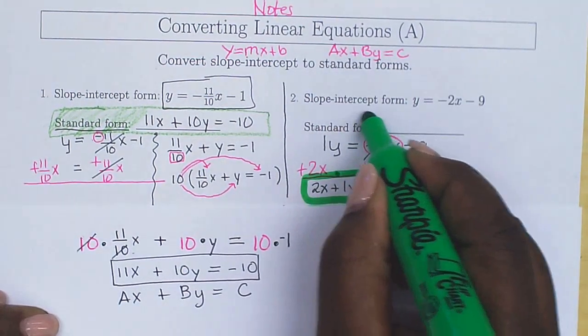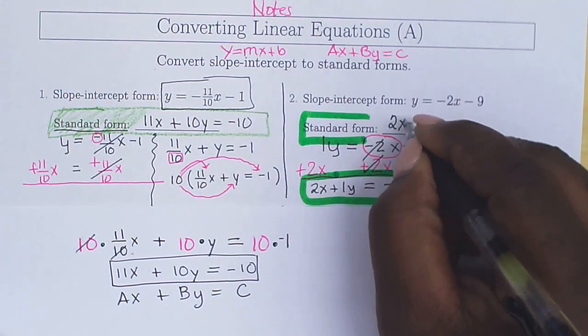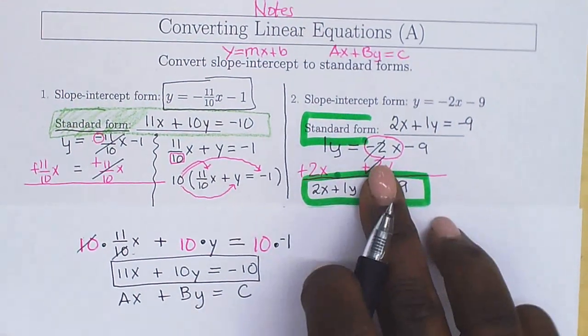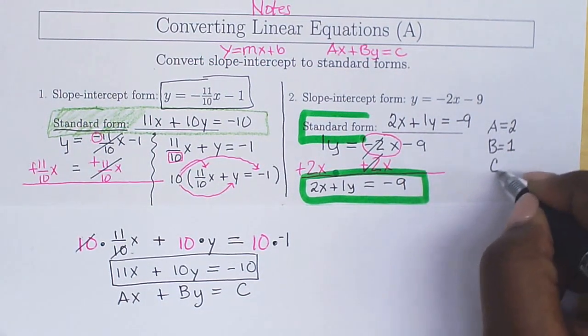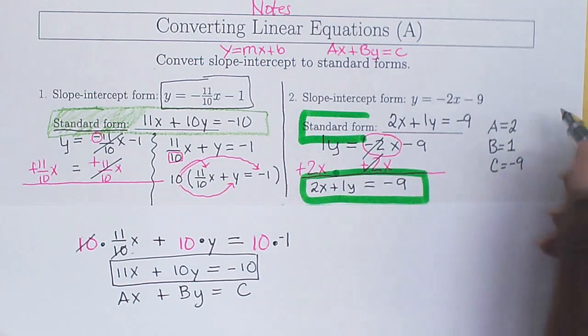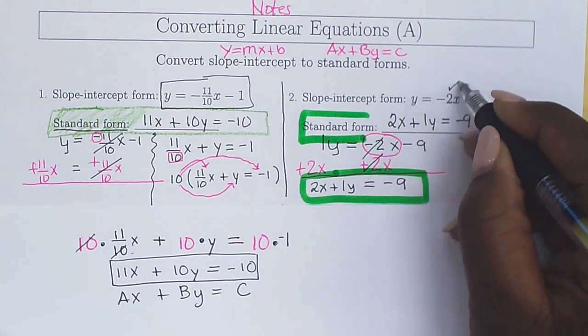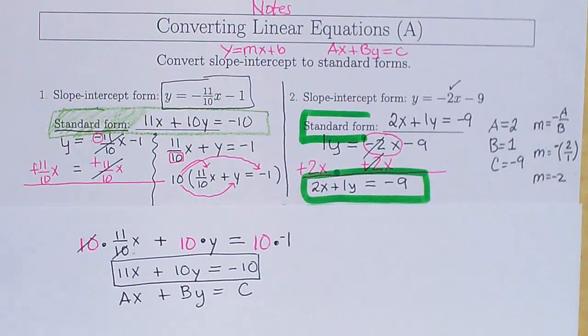Here's my answer. My answer is 2x plus 1y is equal to negative 9. That's my final answer. It's in standard form. My a value is equal to 2, my b value is equal to 1, my c value is equal to negative 9. I want to check my work. I know my slope will be negative a over b. That's going to be negative 2 divided by 1, which is negative 2, just like I have here. I'm able to check my work. That's how you're going to do these problems.